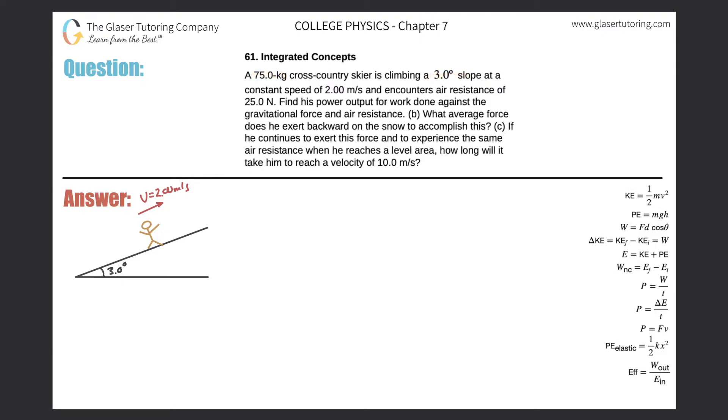Number 61. Integrated concepts. A 75 kilogram cross-country skier is climbing a three degree slope at a constant speed of two meters per second and encounters air resistance of 25 newtons. Find his power output for work done against the gravitational force and air resistance.